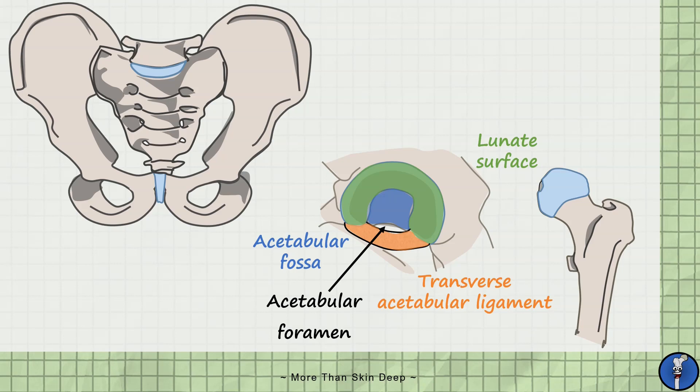Around the edge of the acetabulum is an outcropping of tissue known as the acetabular labrum, which, like the glenoid labrum in the shoulder joint, acts to deepen the hip joint and increase stability.